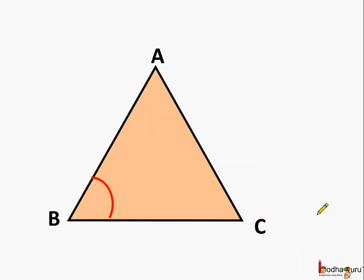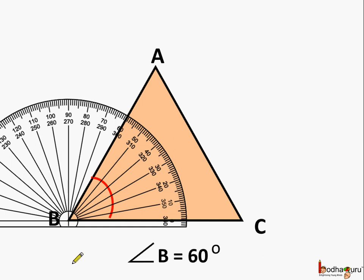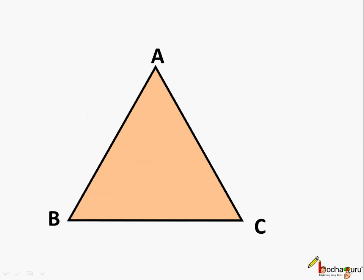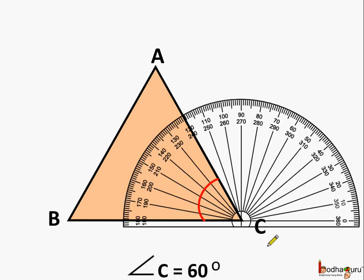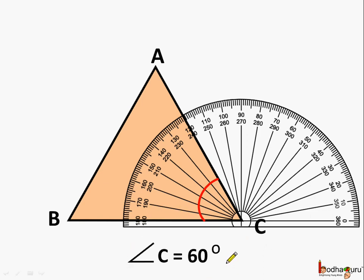Let's measure and see. This is angle B, and if we measure it with a protractor we count 10, 20, 30, 40, 50, 60 — angle B is equal to 60 degrees. Now let us come to angle C. Again we measure it with the protractor and this angle is also equal to 60 degrees.